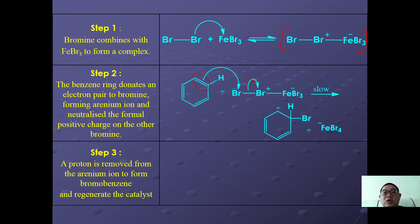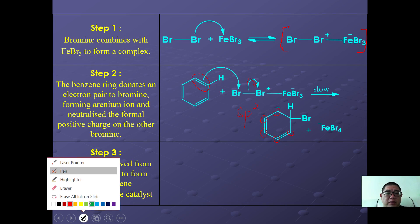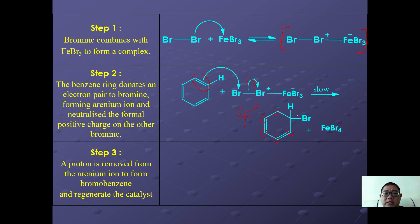When this happens, the pi bond disappears and you form an intermediate complex with FeBr4−. Note that all carbons in this intermediate are still sp2 hybridized, however the carbon bearing the bromine is sp3 hybridized. This is the slow, rate-determining step of the reaction.